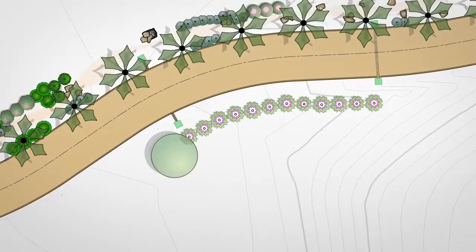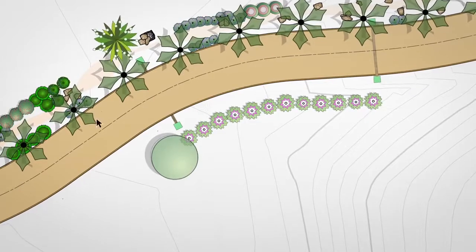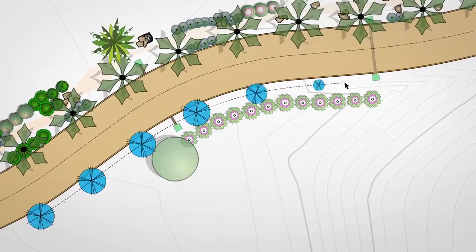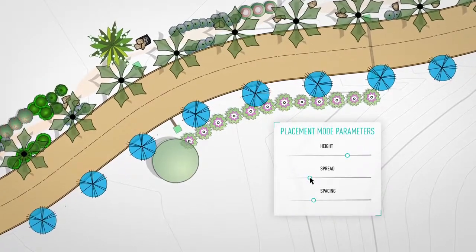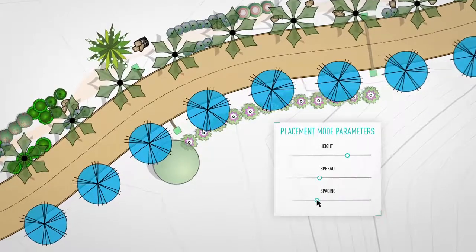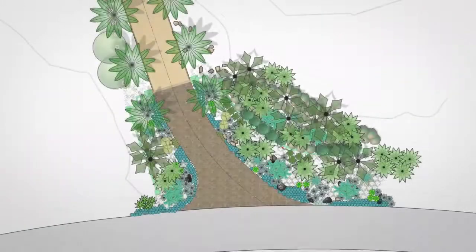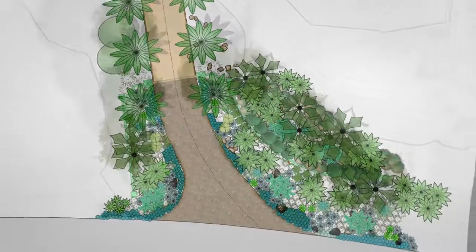Several placement modes including individual, hedged or mast plantings are available with object managed parameters such as height, spread and spacing. No matter if you work in 2D or in 3D,